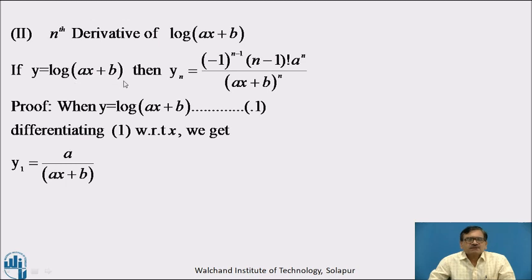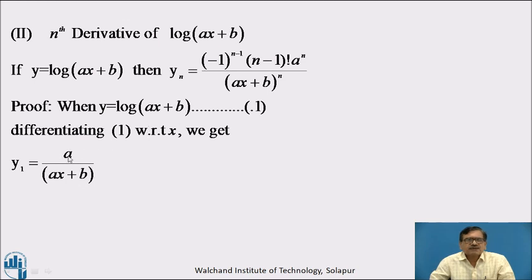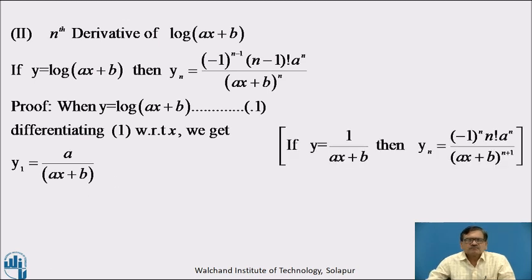The nth derivative of the logarithm function log(ax plus b): if y equal to log(ax plus b), then yn equal to (minus 1)^(n minus 1) into (n minus 1)! into aⁿ divided by (ax plus b)ⁿ. We will see the proof. When y equal to log(ax plus b), differentiating with respect to x, we use the rule that the derivative of log f(x) is 1/f(x) times f'(x). Therefore, the first derivative of log(ax plus b) is a upon (ax plus b).